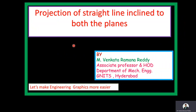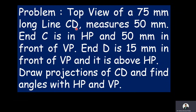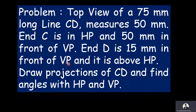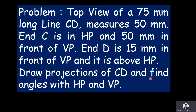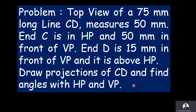Welcome to the discussion on problems on projection of straight line inclined to both the planes. We are discussing problem number seven. The given problem is: the top view of a 75 mm long line CD measures 50 mm. End C is in HP and 50 mm in front of VP. End D is 15 mm in front of VP and above HP. Draw projections of CD and find angles with HP and VP. Now we will extract the data from this problem.